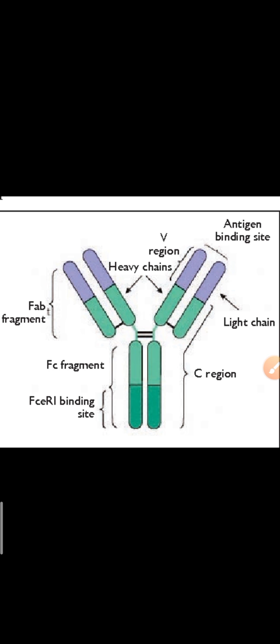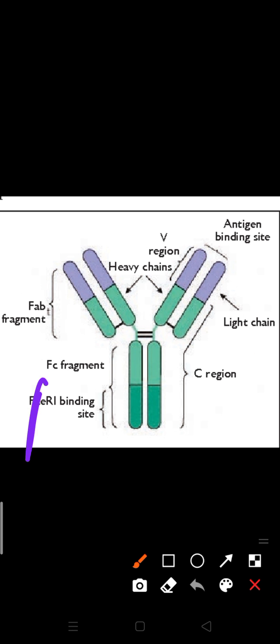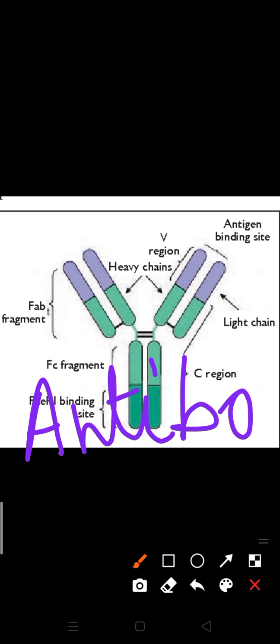What are antibodies? Antibodies are proteins produced within the body by plasma cells against antigens. When our body's plasma cells produce proteins against an antigen, those proteins are known as antibodies.